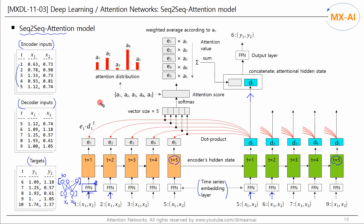Now let's add an attention layer to this model. In the sequence-to-sequence attention model, before passing the output of the decoder to the output layer, the model refers to the output of each step of the encoder to determine which ones are more important and which ones are less important. We can use the concept of similarity to determine this. The dot product of two vectors can be used as a way to measure their similarity — this is called dot product attention. There are several other methods, but we will use this one.